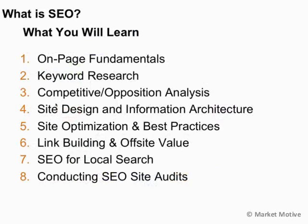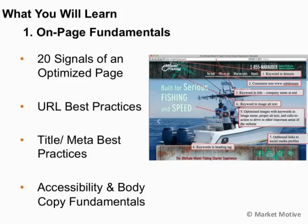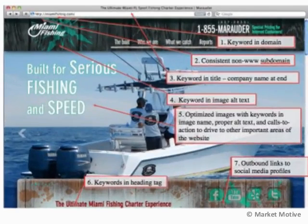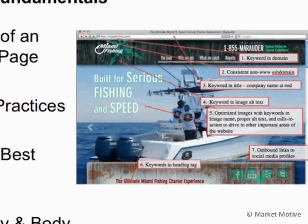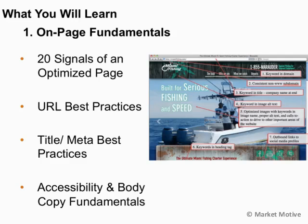Throughout this eight-part course on search engine optimization, we'll look at a variety of areas that impact your website and web pages' search engine result positioning. We're going to start with the on-page fundamentals — the things on an individual web page that will impact your rankings. We'll look at signals or factors that we send through our web page optimization showing that content is relevant for a given keyword, and the best practices for setting up URLs and titles.